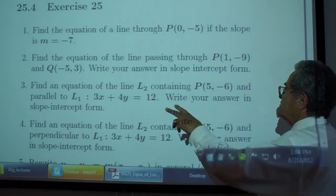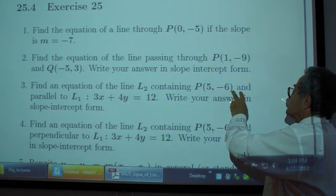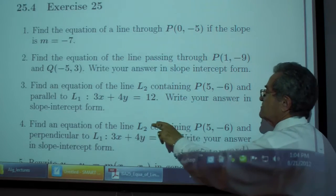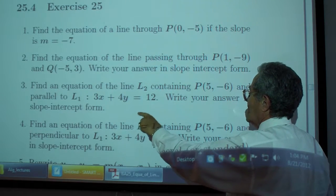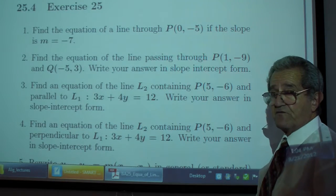Problem 3: Find an equation of the line L₂ containing the point P(5, -6) and parallel to the line L₁: 3x + 4y = 12. Write your answer in slope-intercept form.